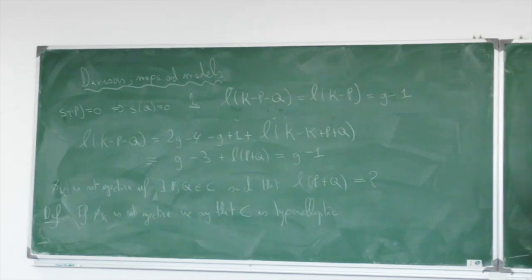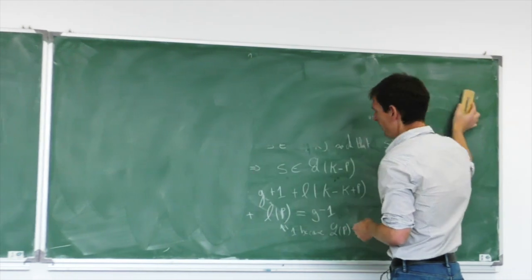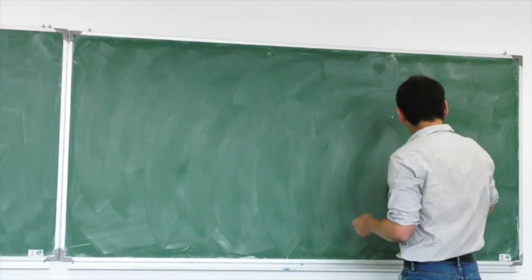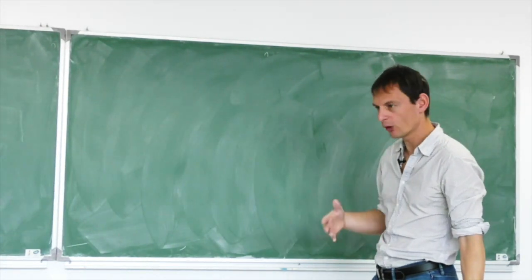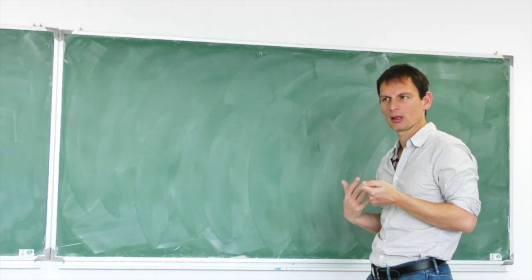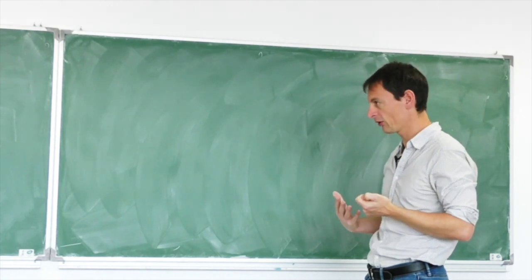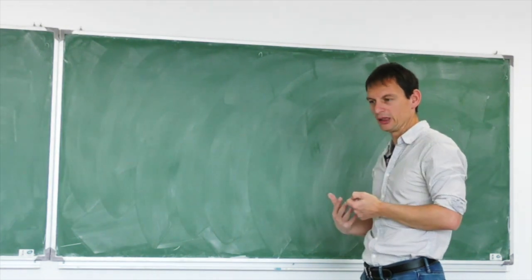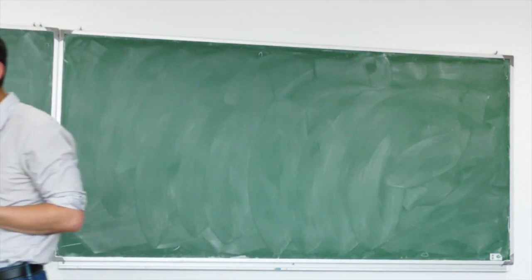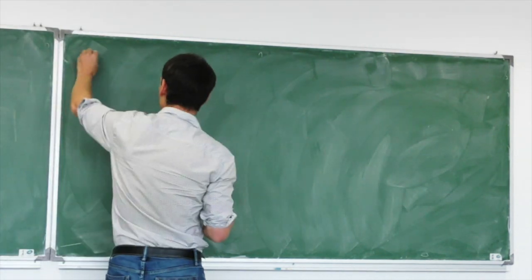For a non-hyperelliptic curve, φ_κ gives a bijective map from C onto its image. But is it an isomorphism? It is a morphism, but a bijective map onto the image is not necessarily an isomorphism. We have already seen an example of this: a map from P^1 to E where E was Y²Z = X³.